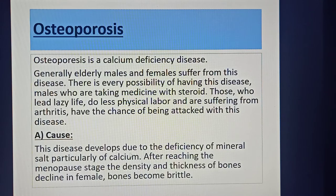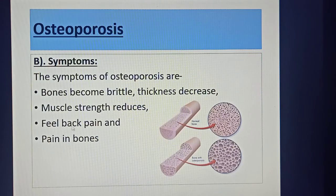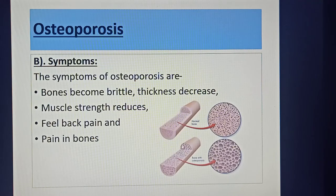After reaching the menopause stage, the density and thickness of bones decline in females, causing bones to become brittle. The symptoms of osteoporosis are: bones become brittle, thickness decreases, muscle strength reduces, back pain, and pain in the bones. This is the structure of a normal healthy bone, and this is the structure of an osteoporotic bone — there are numerous empty spaces in the bone, which indicates osteoporosis.